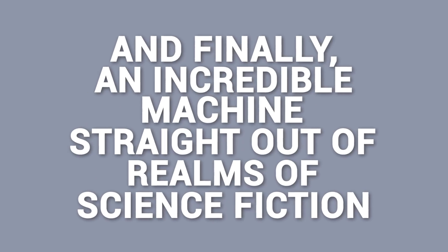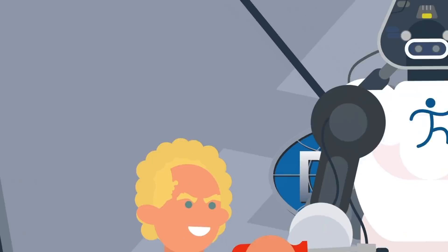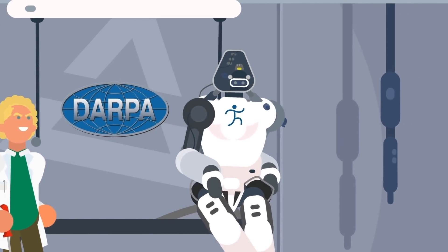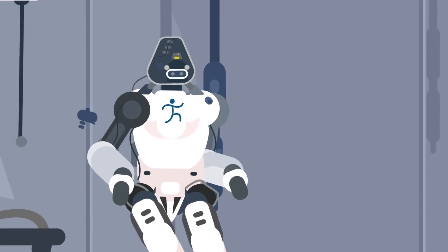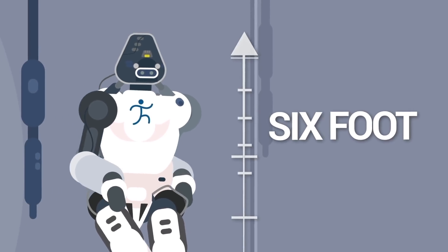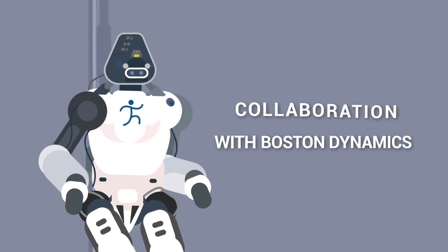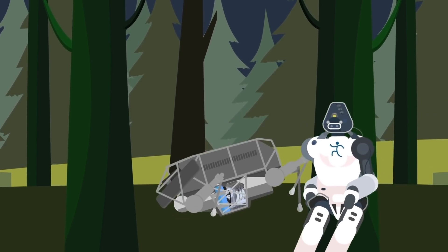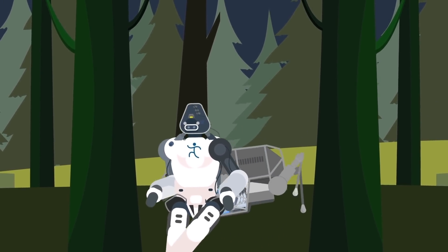And finally, an incredible machine straight out of the realms of science fiction: Atlas, one of the most brilliant humanoid robots ever created. And of course, it was created by DARPA. This six-foot-tall beast of a machine was another collaboration with Boston Dynamics, and has shown a strength and agility that prior androids have only ever dreamed of. Between the electric sheep, we assume.